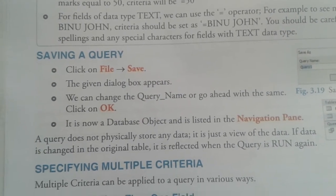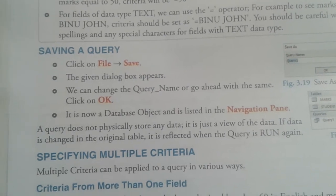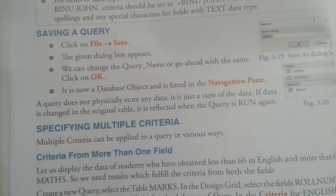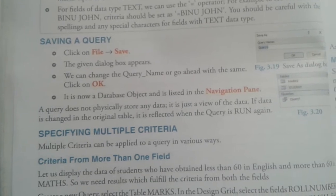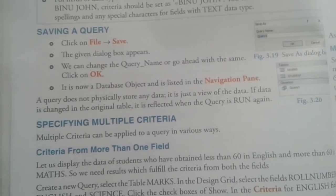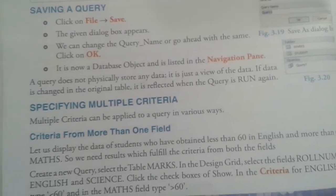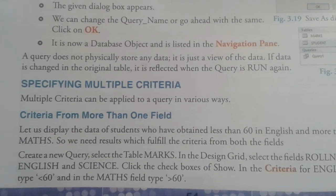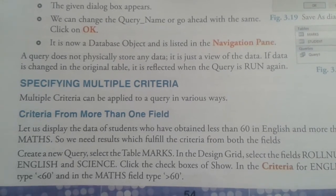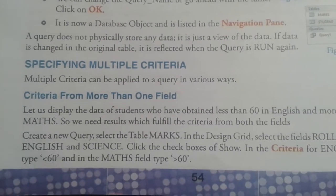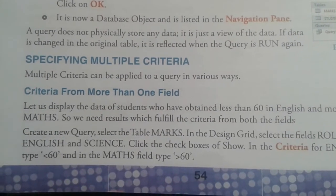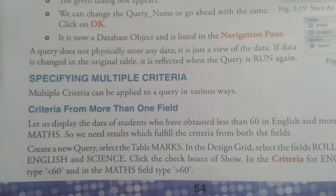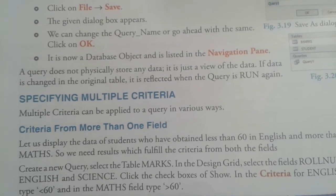Saving a query: click on File, Save; the dialog box appears. We can change the query name or go ahead with the same name, then click OK. The query is now listed in the navigation pane as a database object. The query does not physically store data — it is just a view. If data is changed in the original table, it is reflected when the query is run again. Multiple criteria can be applied to a query in various ways.